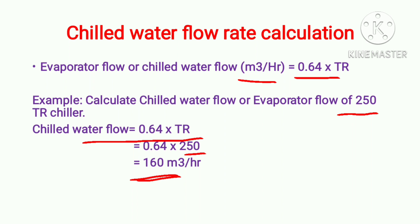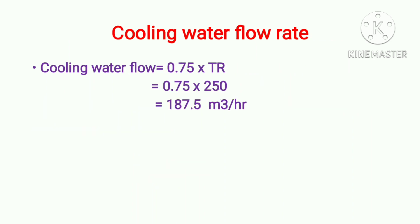Now we will see how to calculate cooling water flow rate, that is condenser water flow rate. The thumb rule for condenser water flow rate is 0.75 into TR. Here our chiller capacity is 250 TR, so we put this value in the formula. After calculation we are getting 187.5 meter cube per hour. This is the shortcut method or thumb rule for calculation of cooling water flow rate.